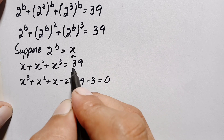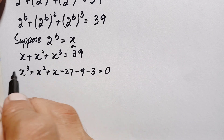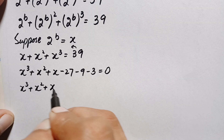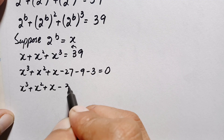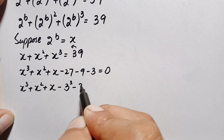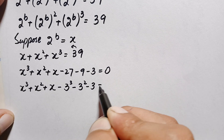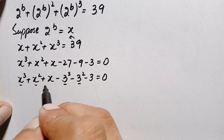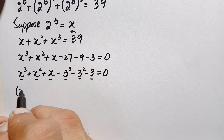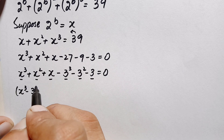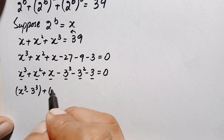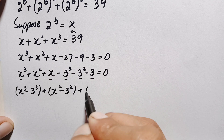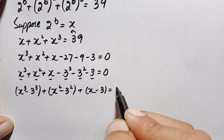Next, we group the terms by degree: noting that 27 is 3 cubed, 9 is 3 squared, and 3 is just 3. So we can write the equation as x cubed minus 3 cubed, plus x squared minus 3 squared, plus x minus 3, all equal to 0.